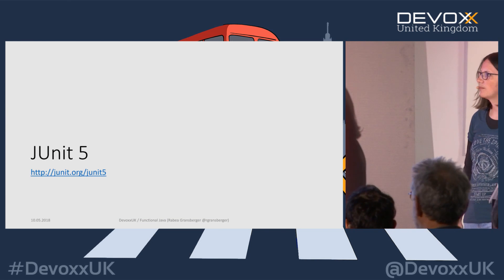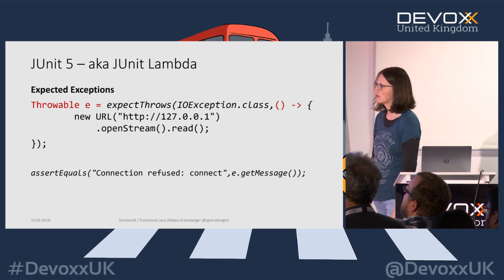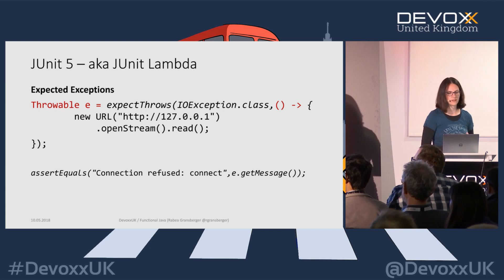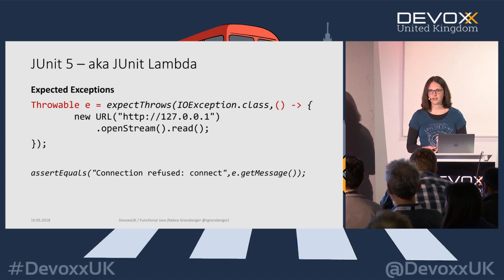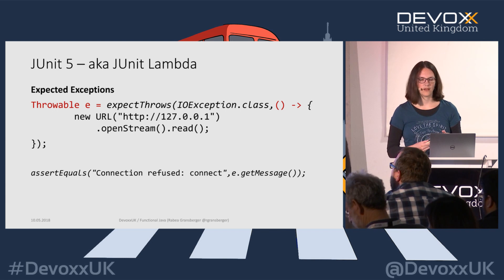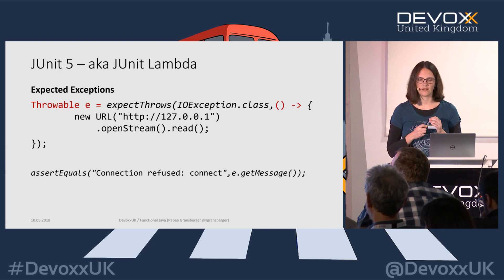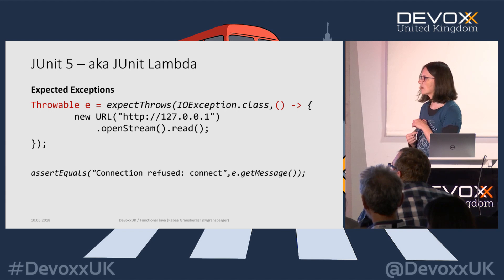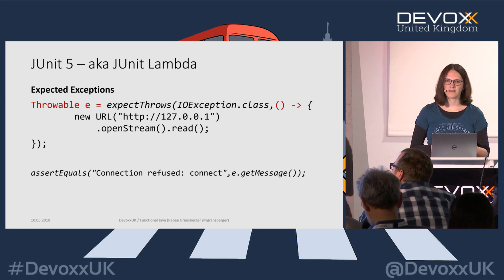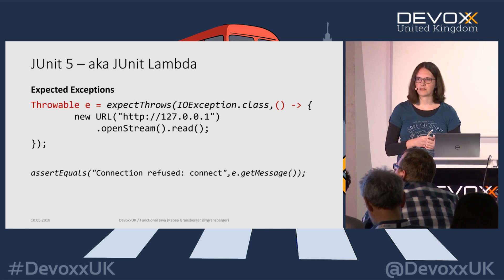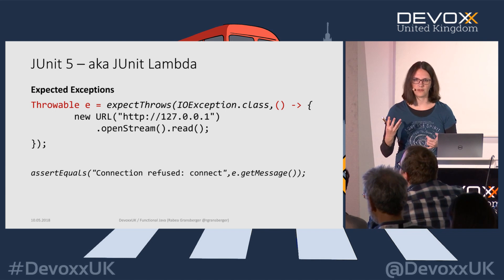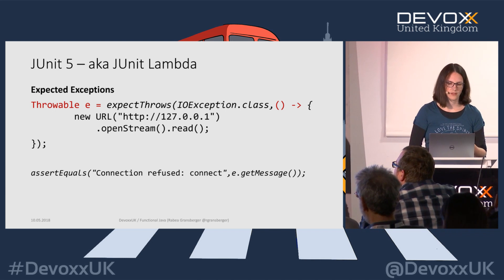JUnit 5 — very briefly. They added some lambda-style test methods. It's now much easier to test for exceptions: previously you always had to annotate a method or manually put in a try-catch. We now have `assertThrows` — you specify what kind of exception you're expecting, then pass the body you're trying to call as a lambda. You also get back the exception, so you can test for the exact exception message, which previously with the annotation you couldn't do without a manual try-catch.